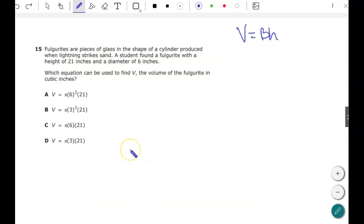All right, next one. Fulgrites are pieces of glass in the shape of a cylinder produced when lightning strikes sand. A student found a Fulgrite with a height of 21 inches and a diameter of 6 inches. Which equation can be used to find the volume of the Fulgrite in cubic inches? All right, so notice that all it is is plugging in the numbers. So we have our formula. Now remember, with a cylinder, the base is a circle. So that area of the base there, the big B, is pi r squared.